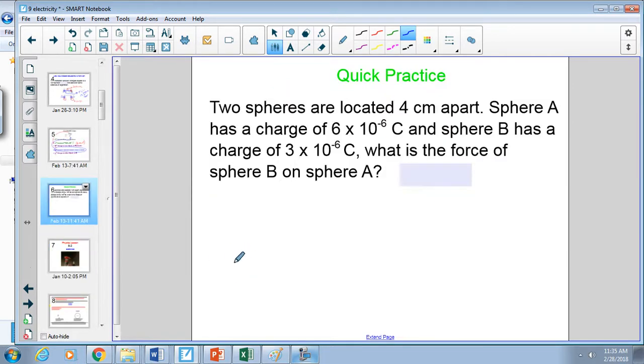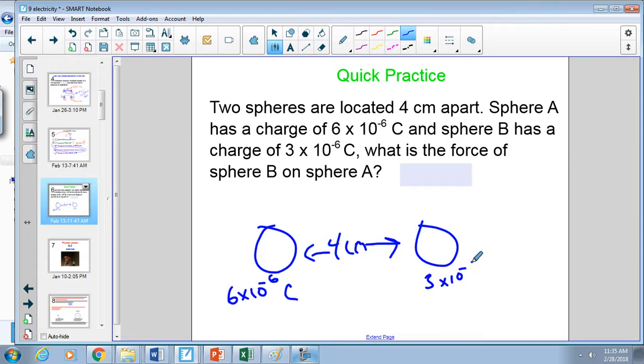Alright, so let's say we have two spheres, sphere A and sphere B. They are four centimeters apart, like so. Sphere A has a charge of 6 times 10 to the negative 6 coulombs, and sphere B has one of 3 times 10 to the negative 6 coulombs. I want to know the force.